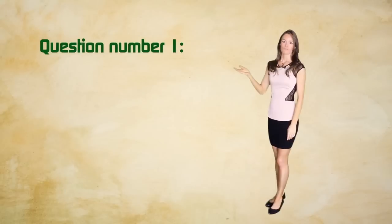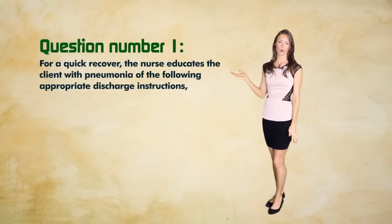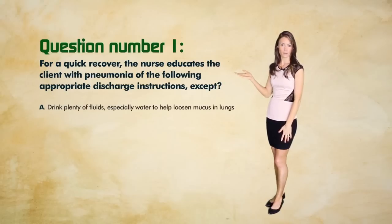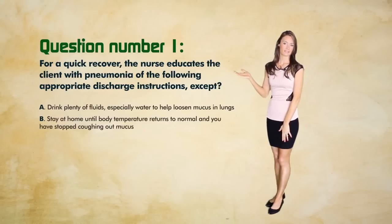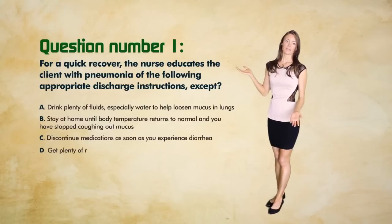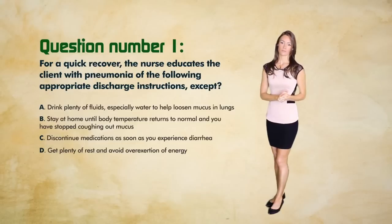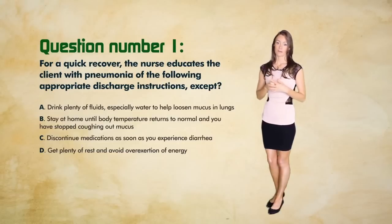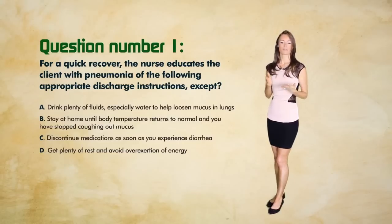NCLEX Question 1: For a quick recovery, the nurse educates the client with pneumonia about discharge instructions — which of the following should be excluded? A) Drink plenty of fluids to loosen mucus; B) Stay home until temperature returns to normal and you've stopped coughing mucus; C) Discontinue medications as soon as you experience diarrhea; or D) Get plenty of rest and avoid overexertion. The answer is C. A major problem is that patients stop taking antibiotics when they feel better or experience side effects, allowing infection to regrow. If the client experiences persistent diarrhea, they must notify their physician to have the antibiotic changed — not simply stop taking it.